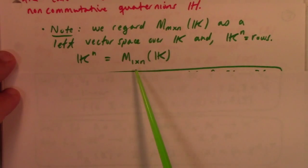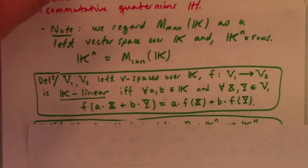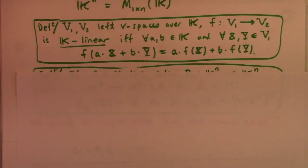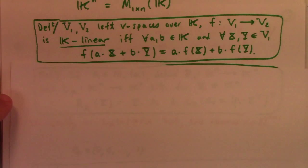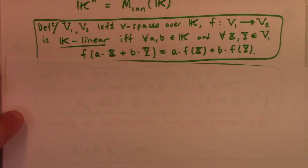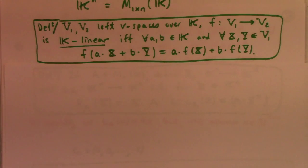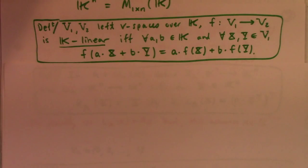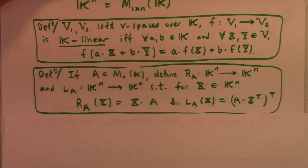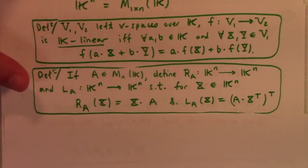If V1 and V2 are left vector spaces over K, a function is K-linear if and only if for all A, B in K and all X, Y in V1, we have the linearity condition — we can pull scalars out to the left. In other work I would probably call that left-linear. Let me focus here.